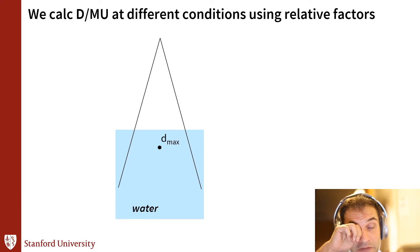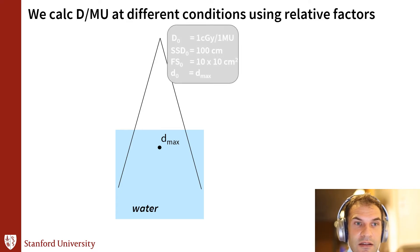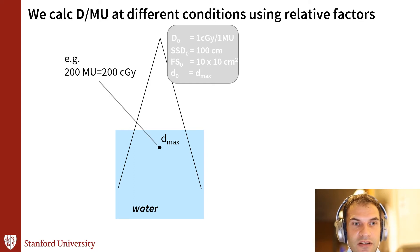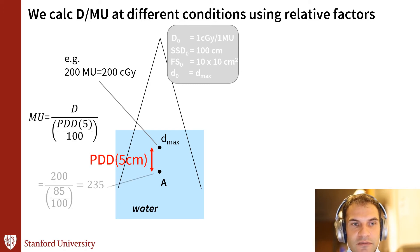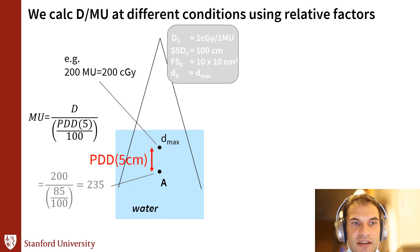We calculate dose per MU for different conditions using relative factors. If we have a point at our calibration condition, 200 MU gives 200 centigray. Then we want to calculate the dose 5 cm deeper — all we're doing is changing the depth. We move down the PDD curve, find that the PDD for 5 cm depth is 85%, so 200 divided by 0.85 gives 235 monitor units needed to deliver 200 centigray at 5 cm depth.